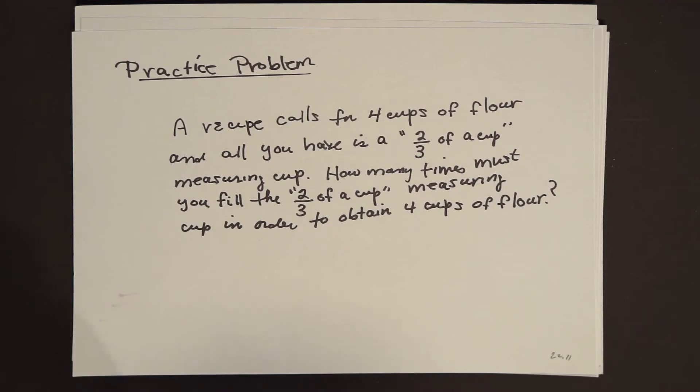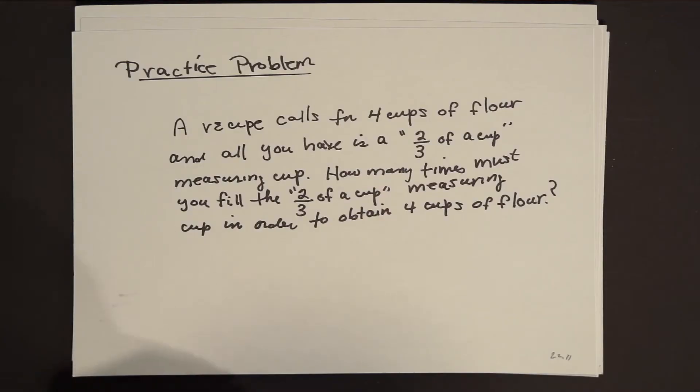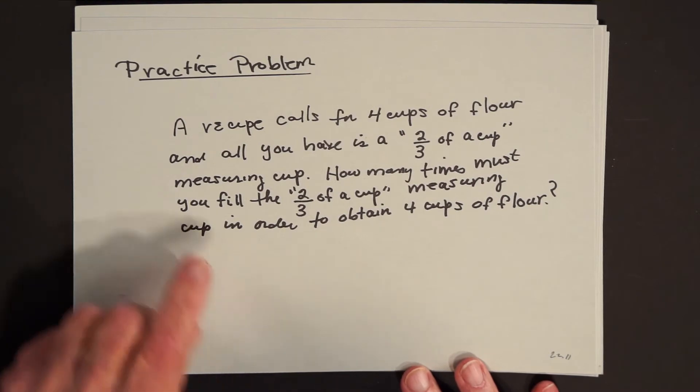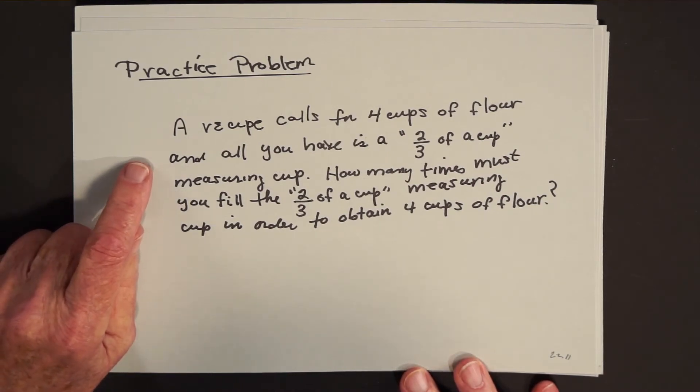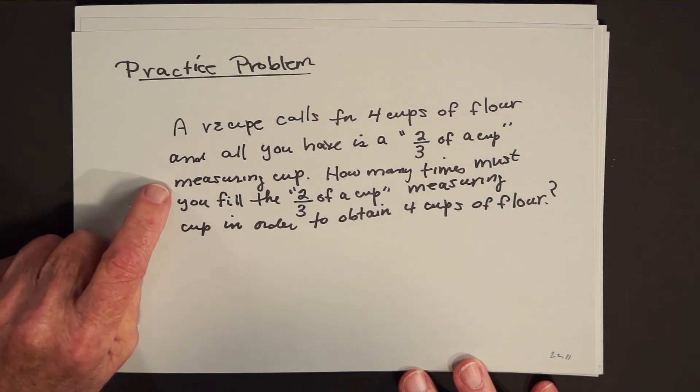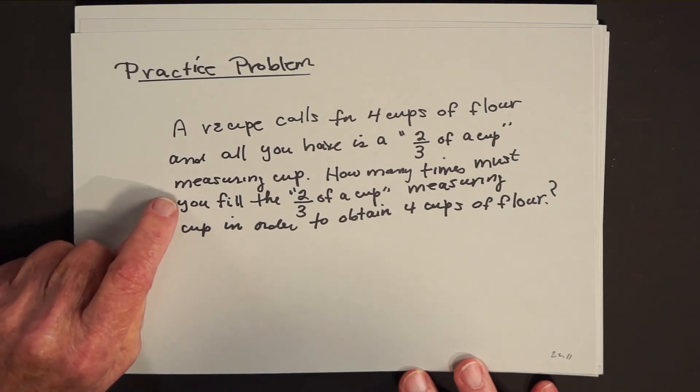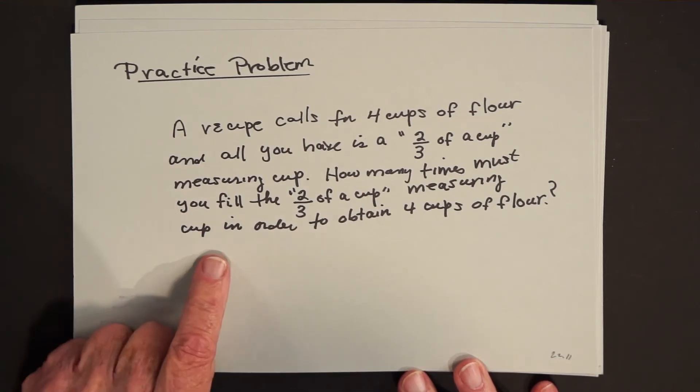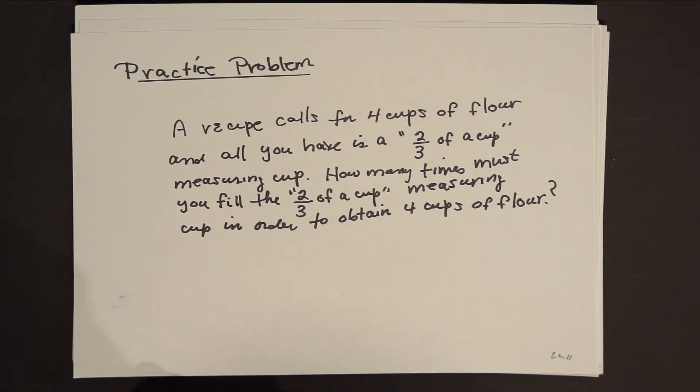This is where you pause the video and try to do the problem. And after you've worked on the problem, whether you've solved it or just put enough time in so that you think it's time to see how I solved it, resume watching and then you'll see my solution. But the problem is, a recipe calls for four cups of flour and all you have is a two thirds of a cup measuring cup. How many times must you fill the two thirds of a cup measuring cup in order to obtain the four cups of flour?